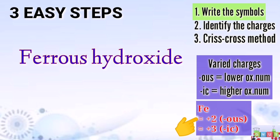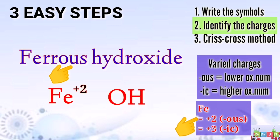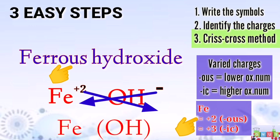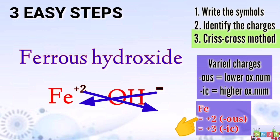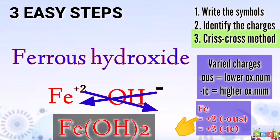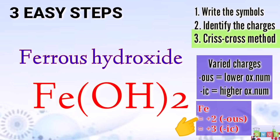Now let's proceed with the first step: write the symbols of the elements. Ferrous is iron, that's Fe. Then hydroxide is OH. Now let's identify the charges. Iron is positive 2 because of the suffix OUS, and the hydroxide is always negative 1. Then let us now proceed to the third step, performing the criss-cross method. Therefore, positive 2 will be the subscript of our hydroxide, and negative 1 will be the subscript of our iron. The final formula for ferrous hydroxide is Fe(OH)₂.